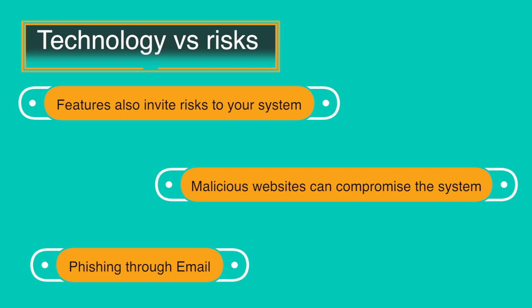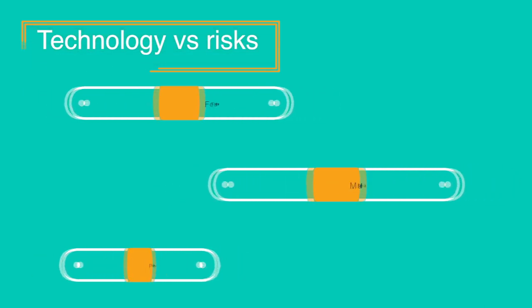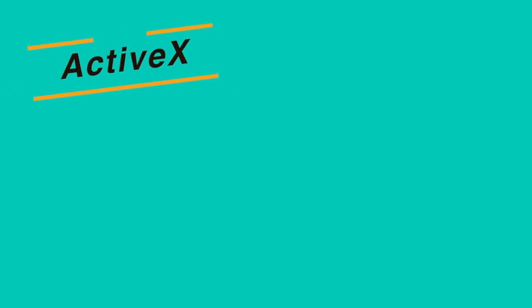In phishing cases, opening the email or attachment can compromise the system. We will discuss some web browser features and the risks that they involve. First, we will discuss ActiveX — what it is, what kind of technology it is, and what risks it involves.